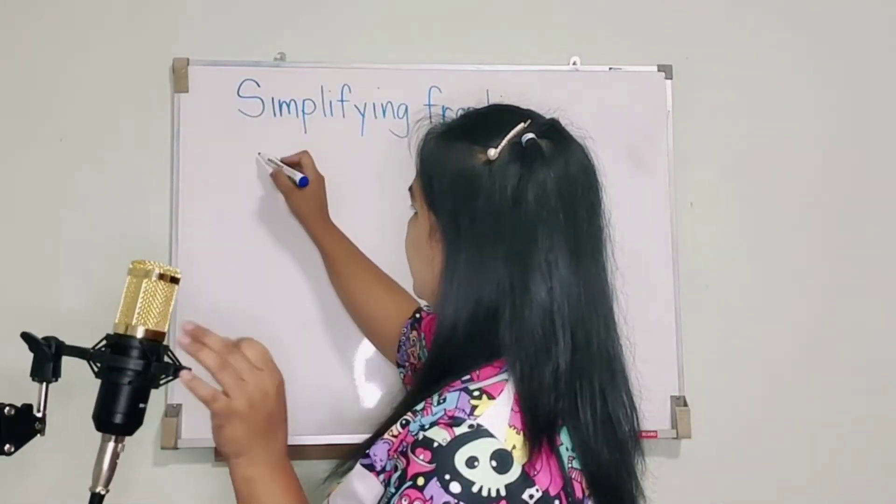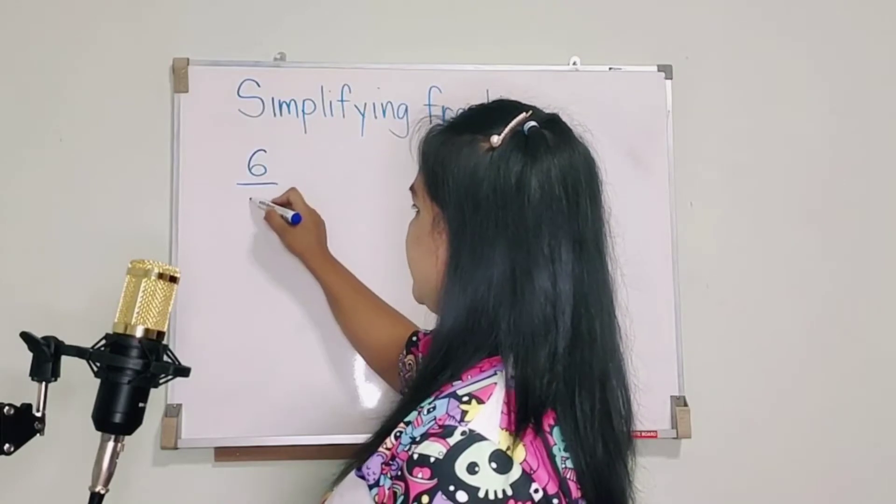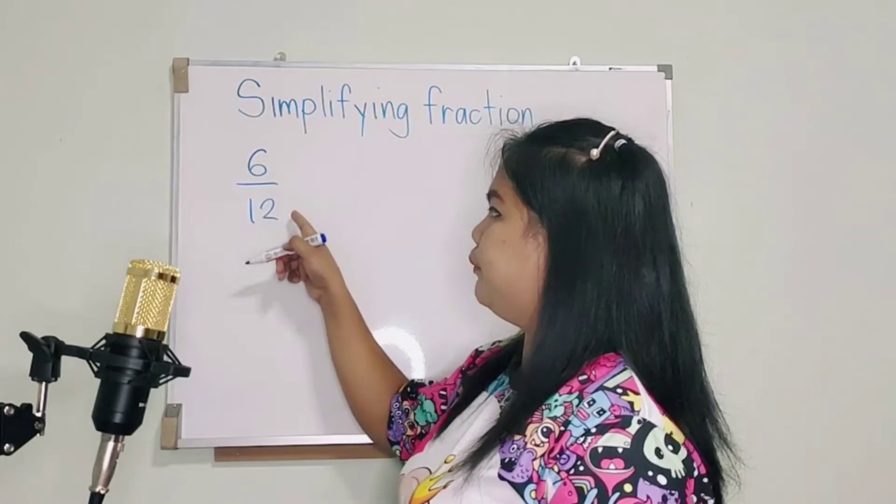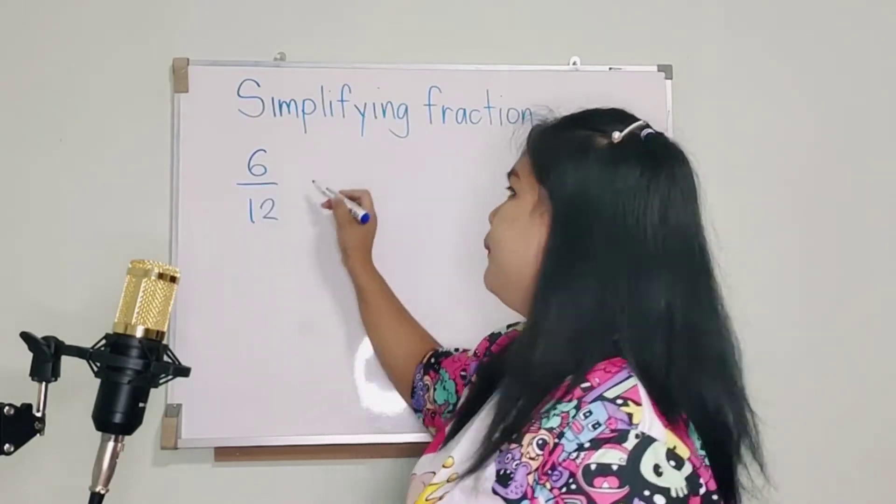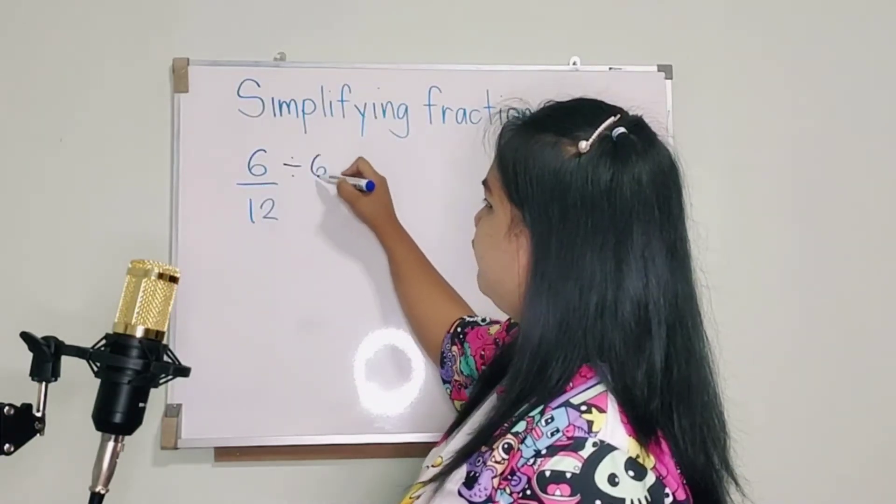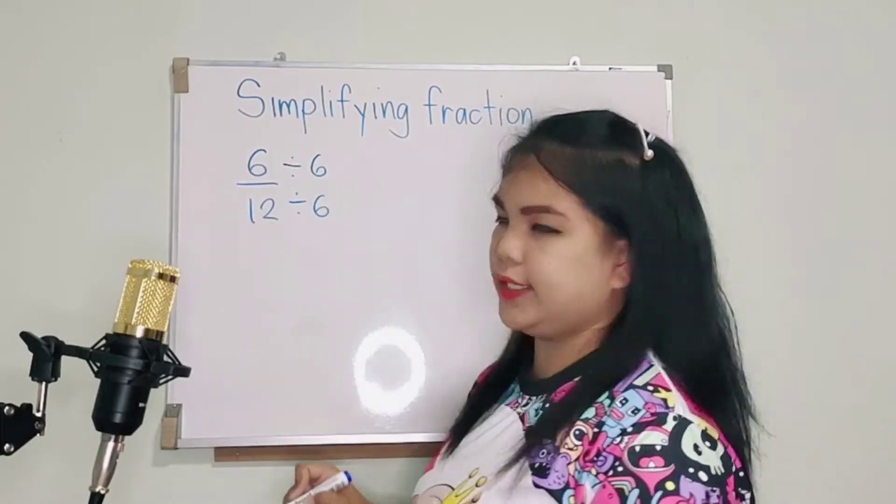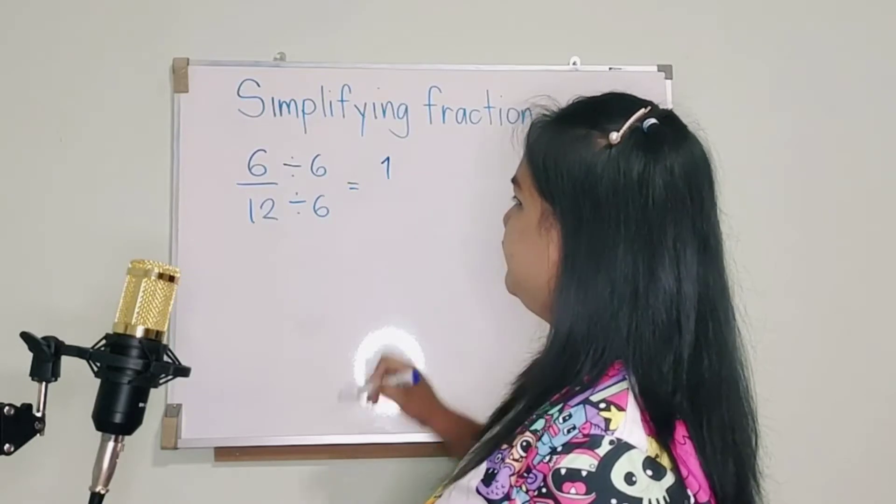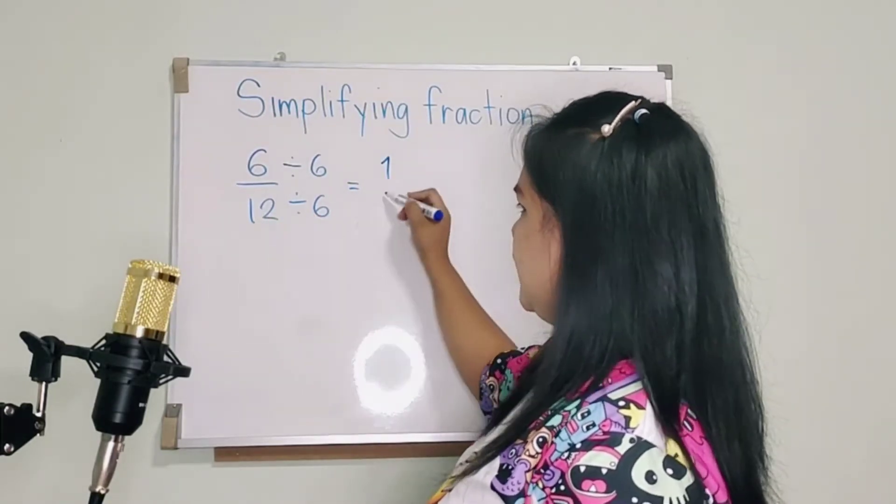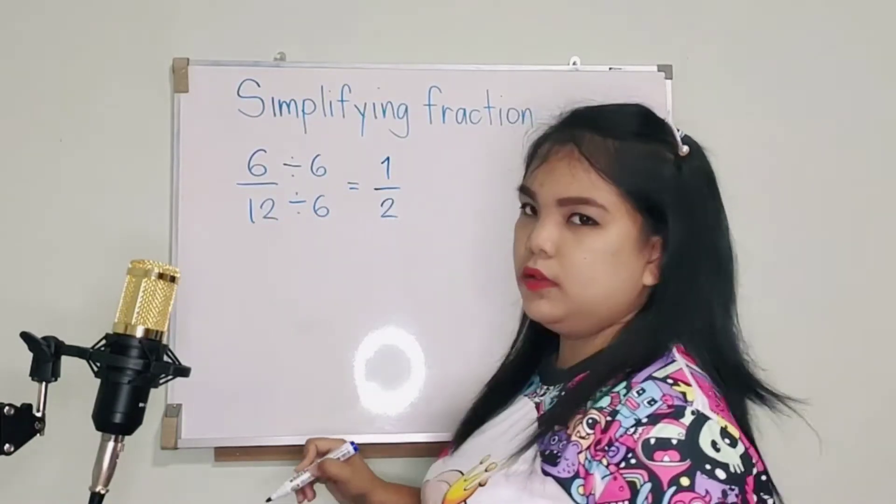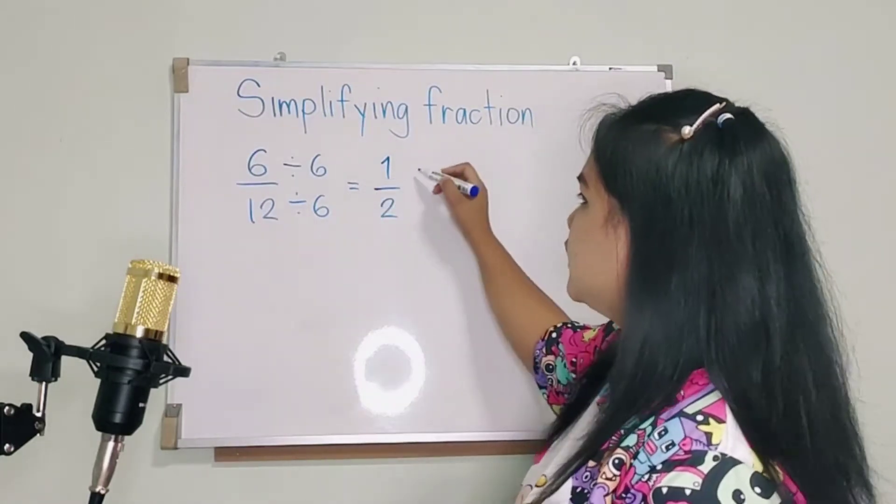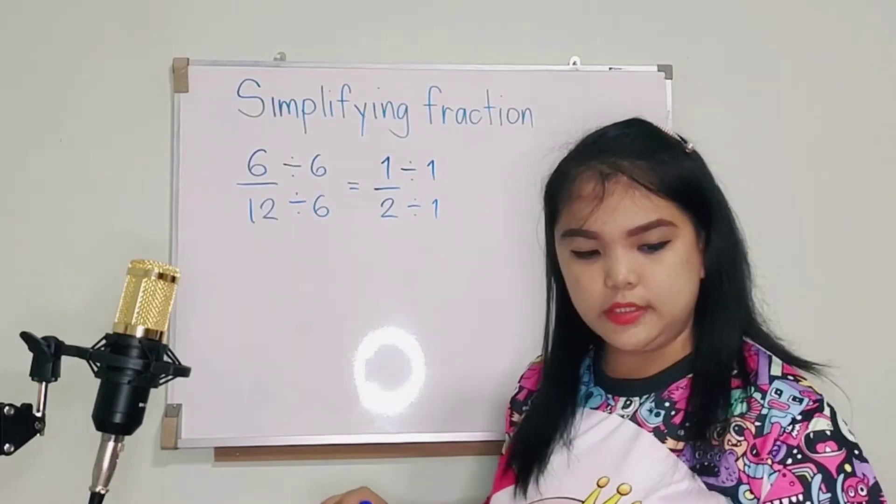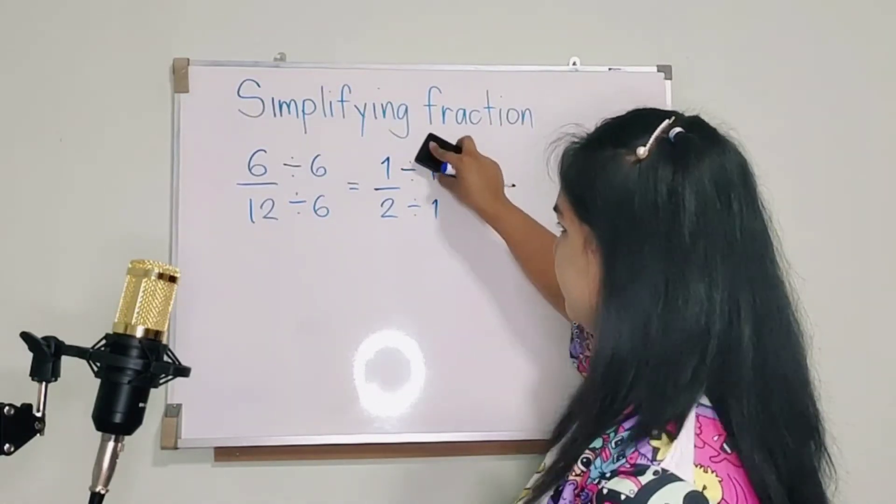We have 6 over 12. Now, you are going to find any number that can divide both sides. So this one, we can divide it by 6, both sides by 6. And you will get what? So 6 divided by 6, you will get 1. And 12 divided by 6 is 2. So if this one is already divided only by 1, it means your answer is already simplified.